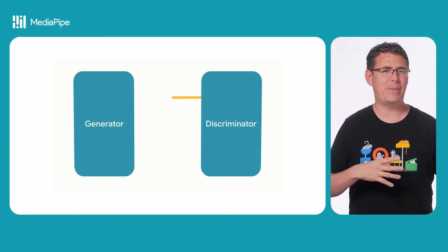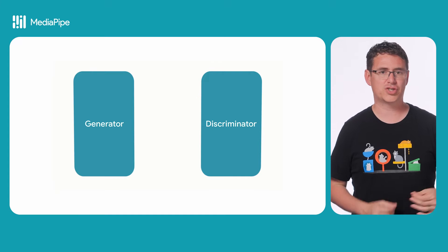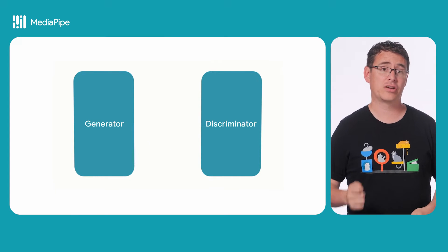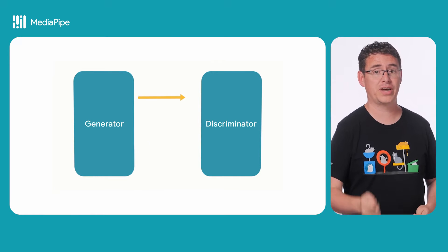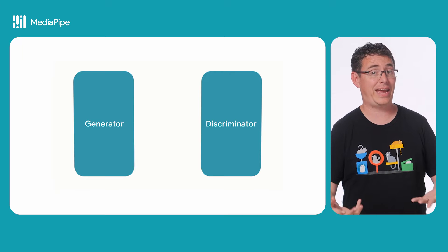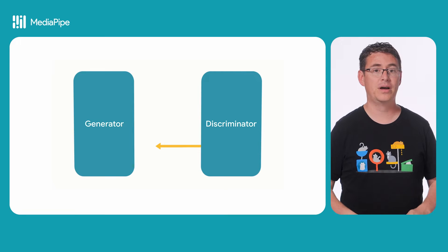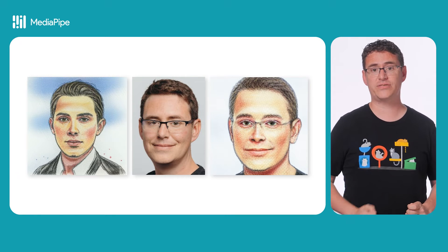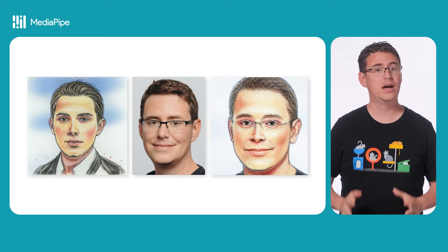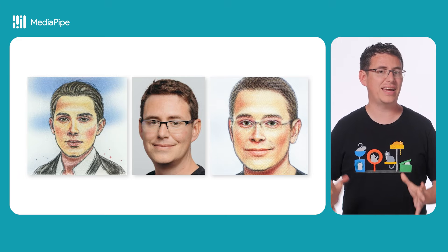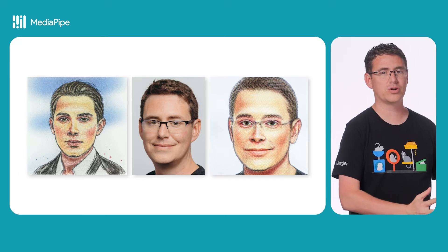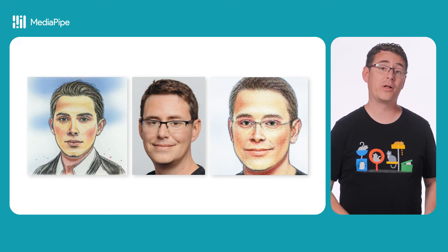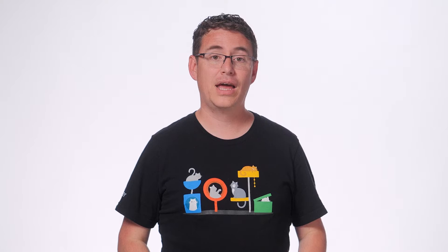After some back and forth during this training phase — which is where the adversarial part of a generative adversarial network, or GAN, comes from — a new image can be given to this customized Face Stylizer to take everything that was learned about that reference style and apply it to a new input image.